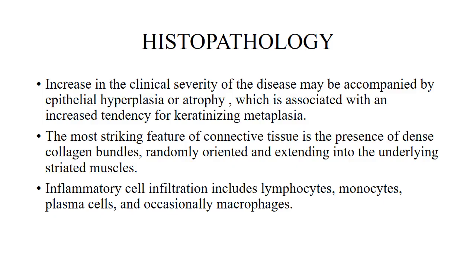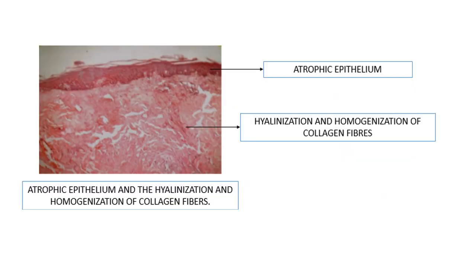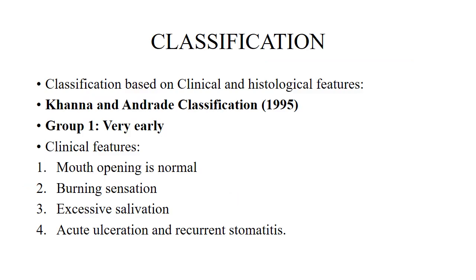Now we will see the histopathological features of oral submucous fibrosis. Increased clinical severity may be accompanied by epithelial hypoplasia or atrophy, associated with an increased tendency for keratinizing metaplasia. The most striking feature of connective tissue is the presence of dense collagen bundles, randomly oriented and extending into the underlying striated muscles. Inflammatory cell infiltration includes lymphocytes, monocytes, plasma cells, and occasionally macrophages. We can see atrophic epithelium and hyalinization and homogenization of collagen fibrosis.